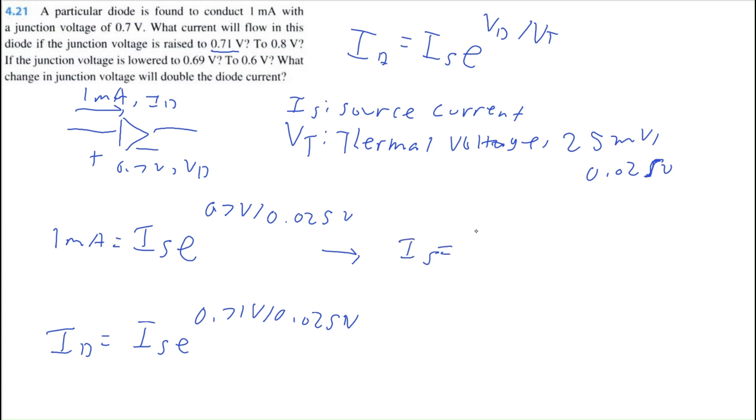I know that Is is equal to 1 milliamp divided by E to the 0.7 volts divided by 0.025 volts. And you can hand calculate this value. I actually did it earlier. It's equal to 6.914 times 10 to the negative 16 amps. So very small value.